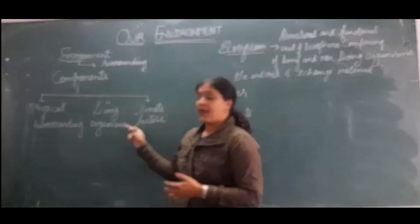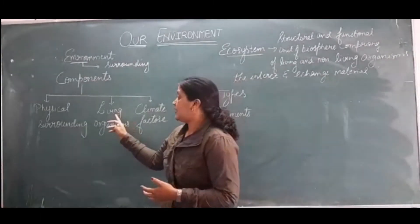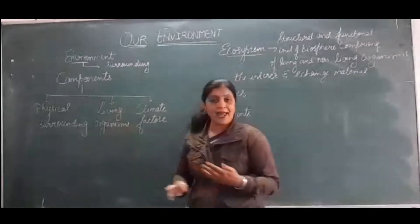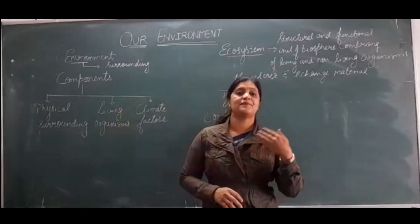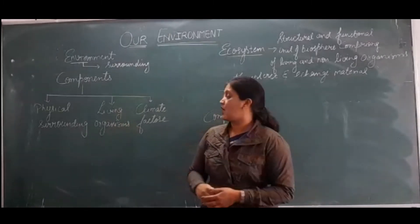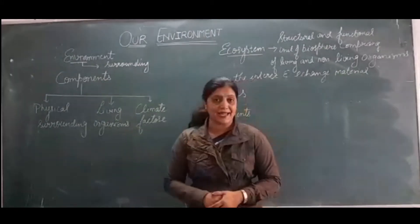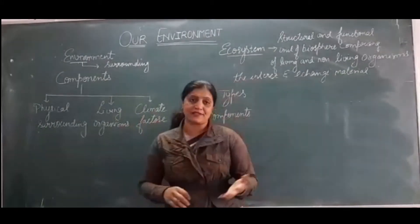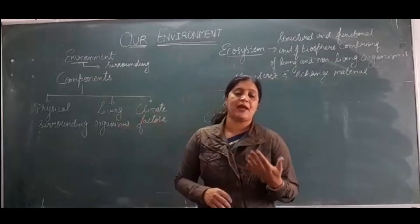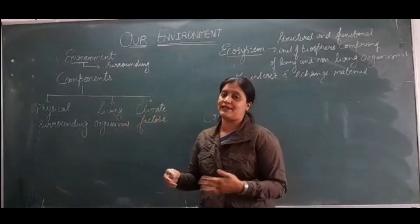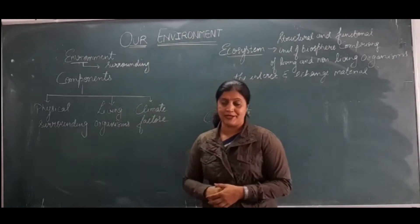So if you see the major components of our environment, there are three main parts: physical surroundings like air, water and all; living organisms like plants, animals, microorganisms, humans, fungi, bacteria; and climatic factors like sunlight, wind speed, temperature, pressure — all the climate factors which are going to affect our environment.